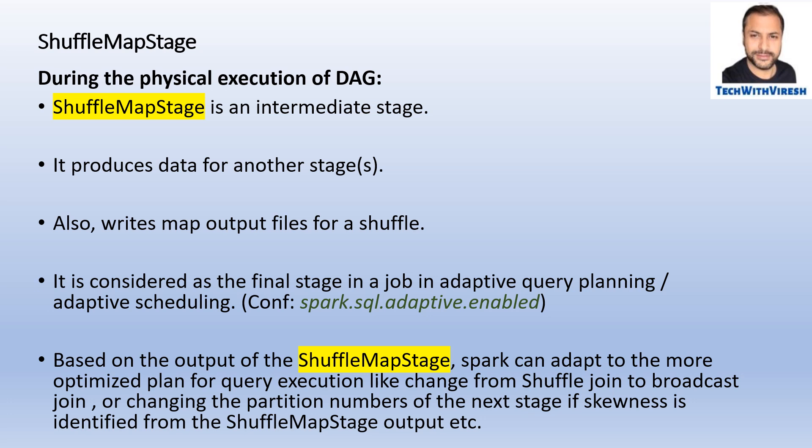To recap: a stage is a step in the physical execution plan, and there are two types. The first is the shuffle map stage. It is an intermediate stage — not the final one, because the result stage is the eventual stage where actual materialization happens. There can be a hierarchy of dependent stages. The shuffle map stage produces output files which go as input to the next stage via a shuffle.